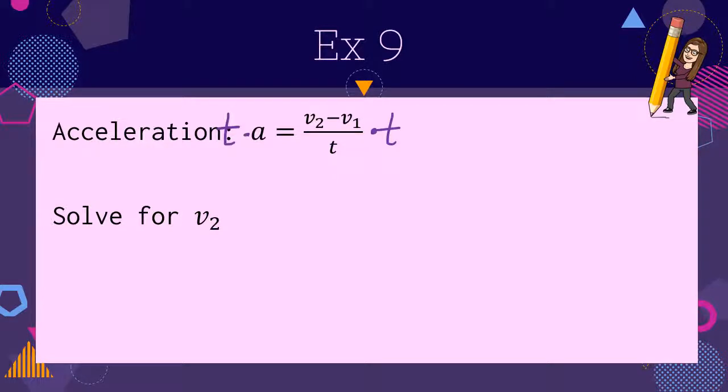So currently, if I do that, I have ta = v₂ - v₁. Now to isolate, instead of subtracting, I need to add velocity sub 1. That means velocity sub 2 is equal to time times acceleration plus velocity sub 1, v₂ = ta + v₁. Make sure you include any notations that were in the original.